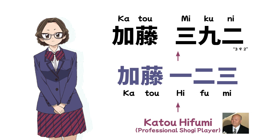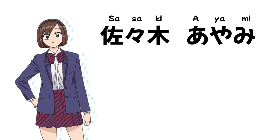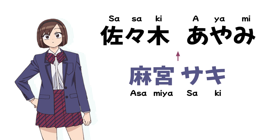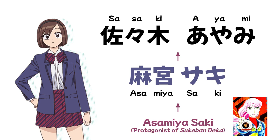Komi's second field trip buddy is Sasaki Ayami. Her name is an anagram of Asami Asaki, the yo-yo-wielding protagonist of the classic '70s delinquent girl manga 'Sukeban Deka.' Likewise, Komi's friend also wields a yo-yo.